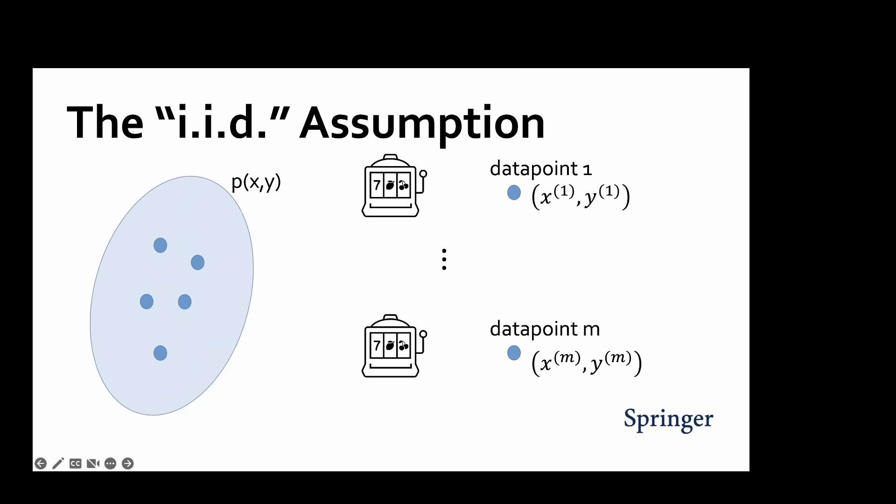The IID assumption interprets data points in a given data set as the realizations of independent random variables with an identical probability distribution. This probability distribution is a joint distribution of the features and the label values of a randomly chosen data point. For a given hypothesis, the loss values obtained for different data points become realizations of IID random variables.